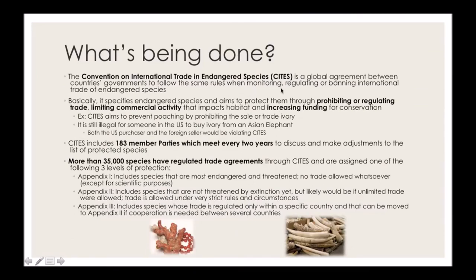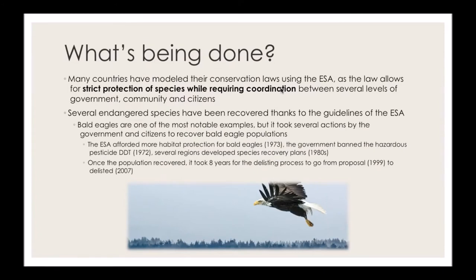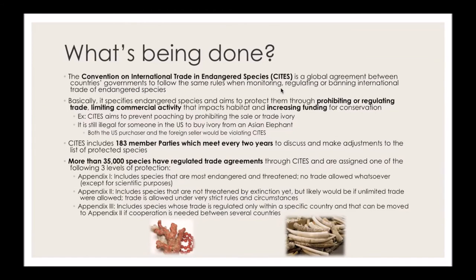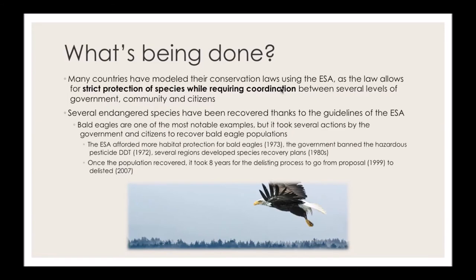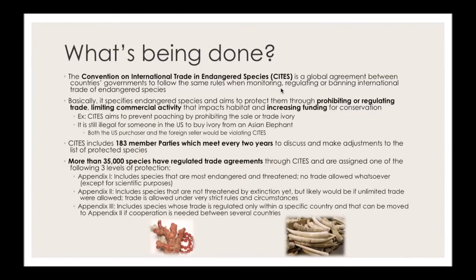The ESA is a United States-specific law. While other countries have modeled their laws after it, the ESA really only applies to the United States. The Convention on International Trade in Endangered Species, or CITES, is the global agreement between many countries' governments to follow the same rules when monitoring, regulating, or banning international trade of endangered species. The ESA more so governs what is allowed with a species within the United States based on conservation status, whereas CITES governs whether trade between countries is allowed.